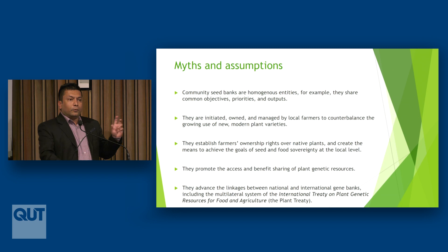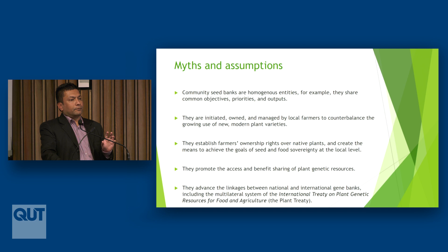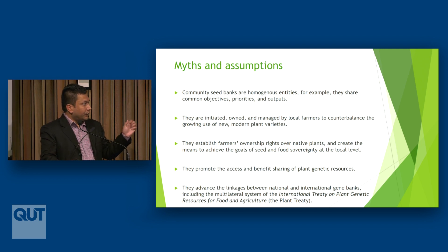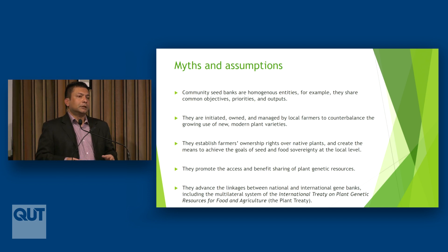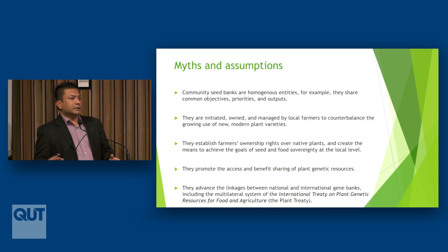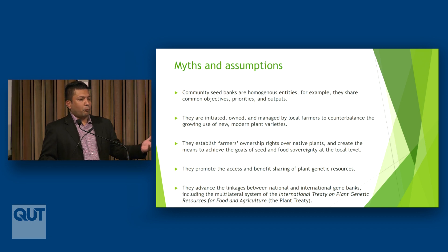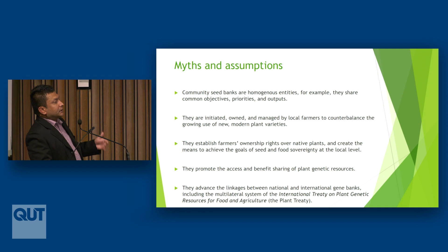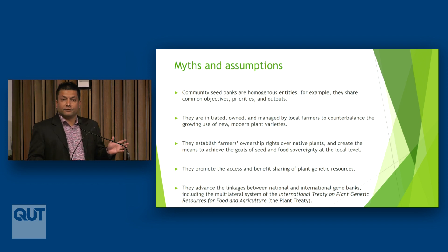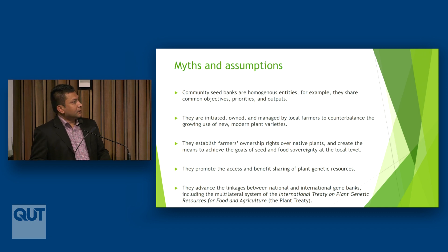Among these seed and plant banks there are some unique types. In many developed countries these are known as Seed Savers Networks, managed by local farmers or gardeners in places like the United States, Canada, Australia, and the UK. Similarly, in many developing countries a comparable structure is found and recognized as community seed banks.